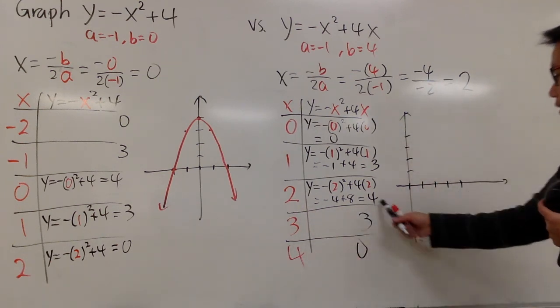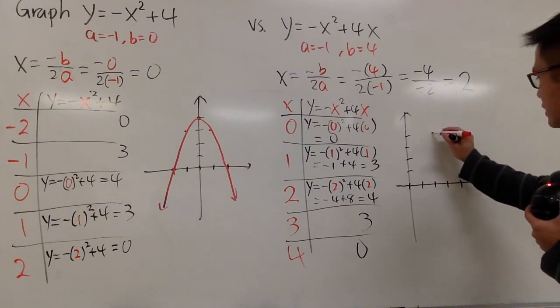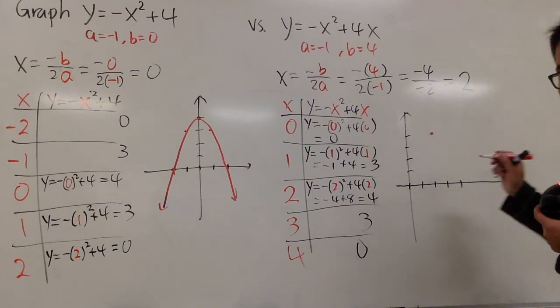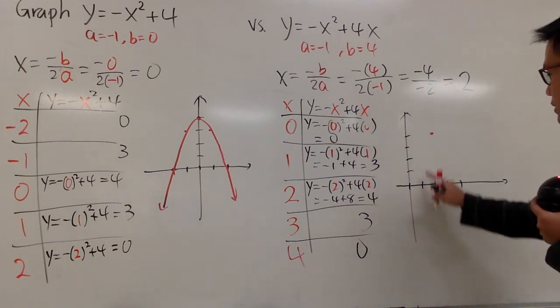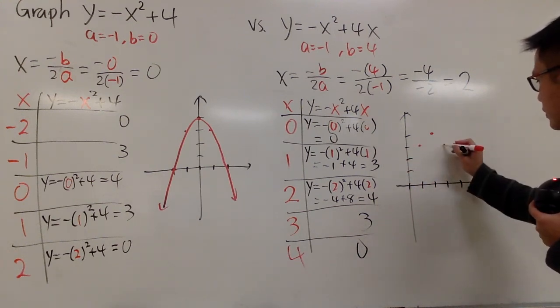When x is 2, y is 4, so we have this vertex here. And then when x is equal to 1 and 3, the y values are both equal to 3, so we will have this right here and also this right here.